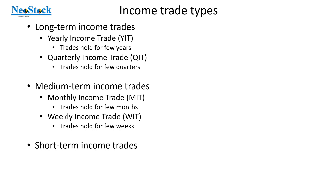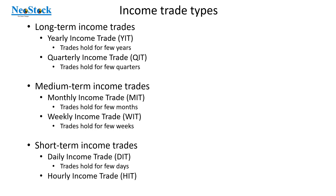The third type is short term income trades. Under short term income trades you have a couple of types. One is daily income trade, in short DIT — these are trades you hold for few days. You place your order today and exit after a few days after reaching the target. The next one is hourly income trade, in short HIT — these are trades that hold for few hours. You buy the stock and after few hours you sell it after reaching the target. Hourly income trades are also called day trading, meaning within the same day you take an entry and exit.